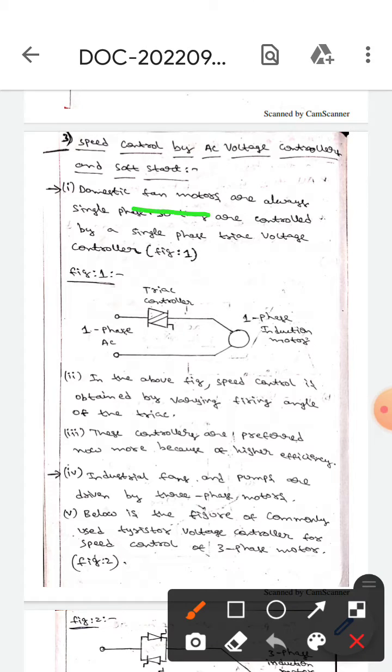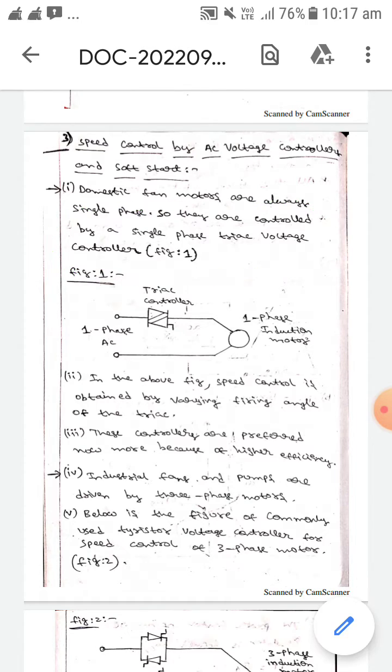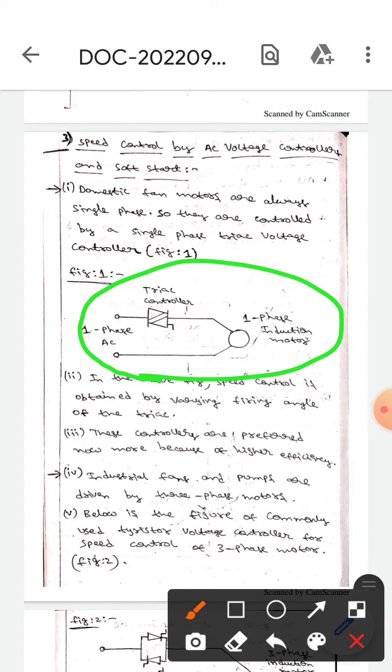Domestic fan motors are always single phase. They are controlled by a single phase triac voltage controller. This is the diagram of single phase triac voltage controller.